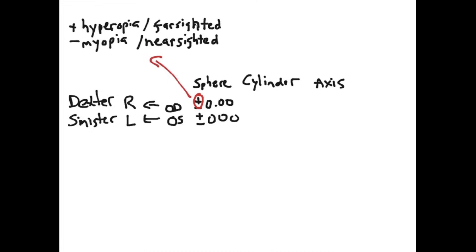Another term for hyperopia is farsightedness, and another term for myopia is nearsighted. People that are nearsighted are much more common than those who are farsighted. It is very important that you always include the plus or the minus in front of the sphere — otherwise, you have no idea whether the person is farsighted or nearsighted, and you're left to just guess.